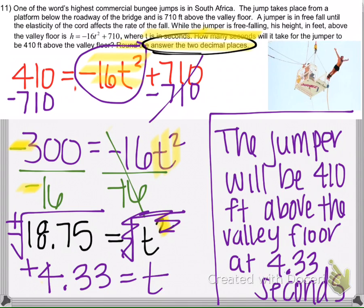So the jumper will be 410 feet above the valley floor at 4.33 seconds.